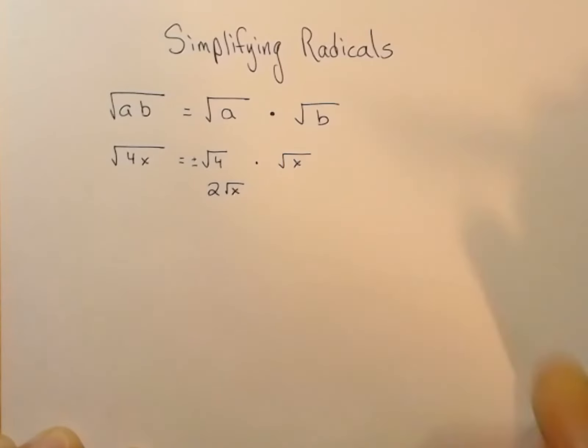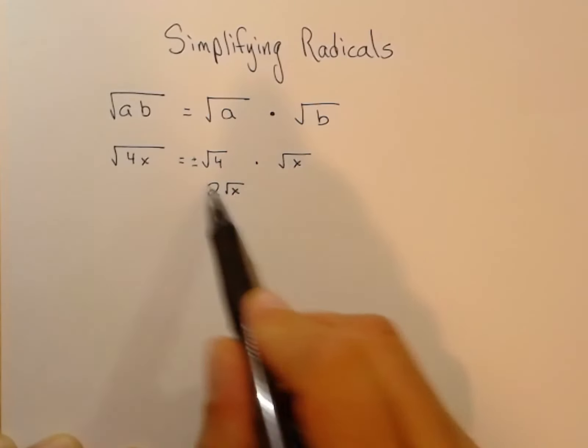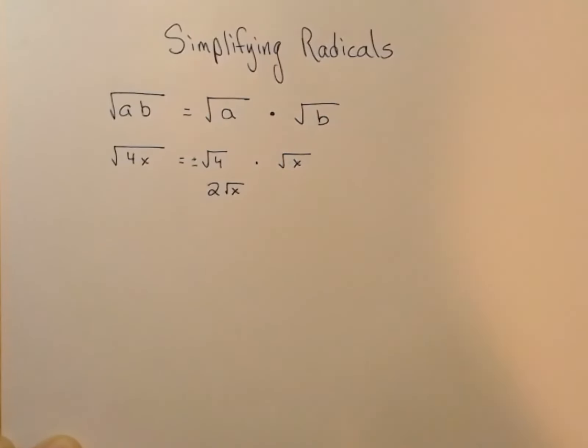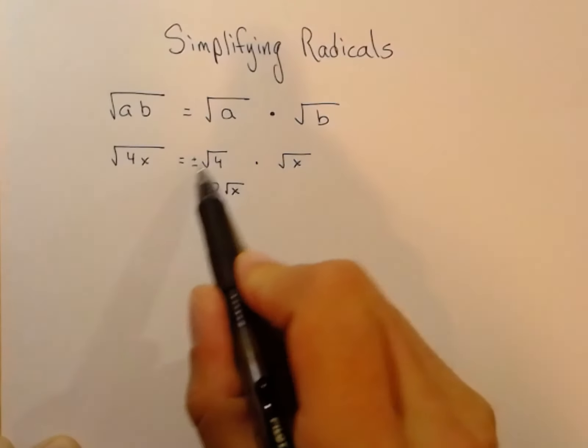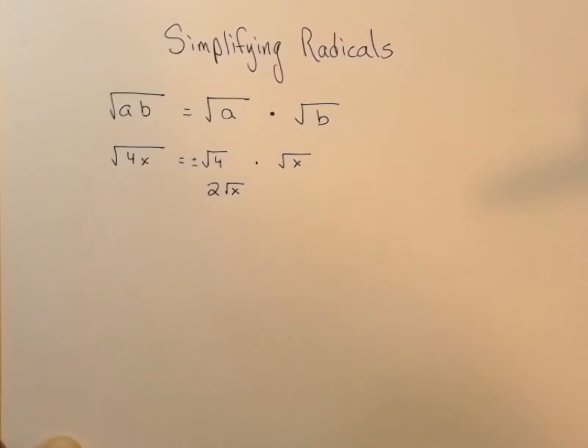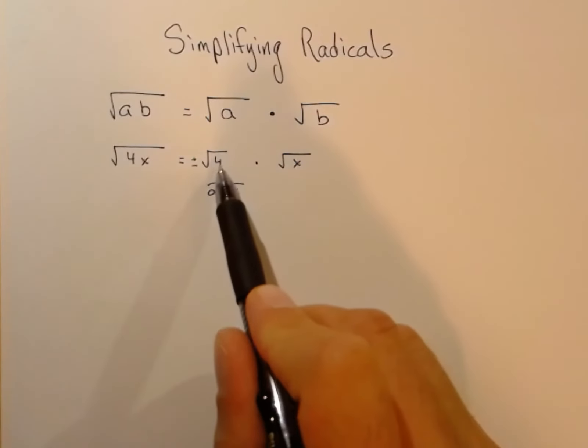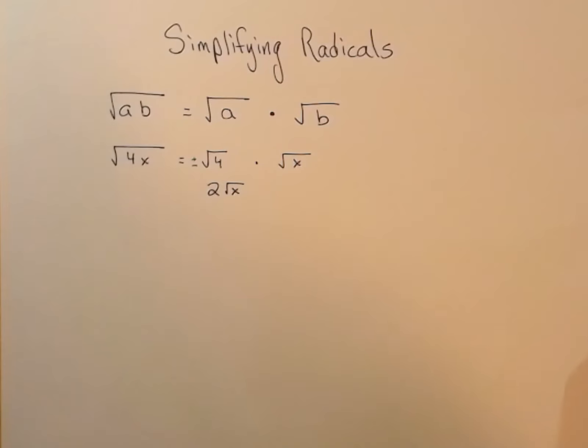But in geometry, we're pretty much just going to be looking at the positive version. This is mostly for geometry students, so we're just going to concern ourselves with the positive version. But technically, algebraically, when you take the square root, there's a negative answer as well. Negative 2 squared is also 4.